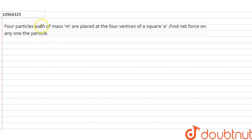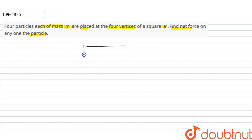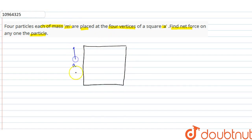In this question, we have 4 particles that have mass m. They are placed at the 4 vertices of a square which has side a. We have to find the net force on any one of the particles. So first of all, let's draw a square of side a. These are the point masses.